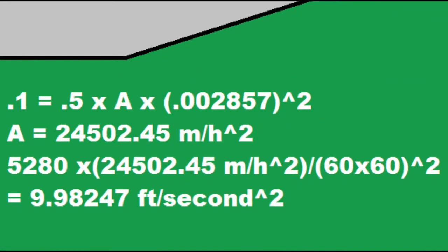So now we're going to take the time value and plug it into our previous equation, which is 0.1 miles equals 0.5 times acceleration times the time, which we just found, squared. So after you do some algebra, you get for the acceleration, 24,502.45 miles per hour per hour.